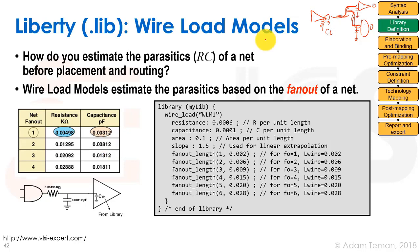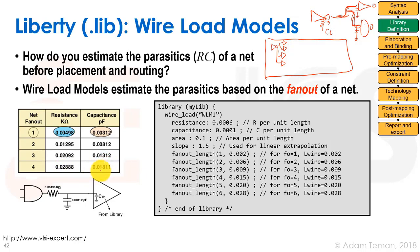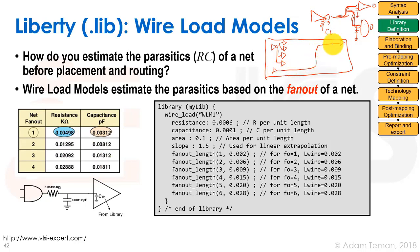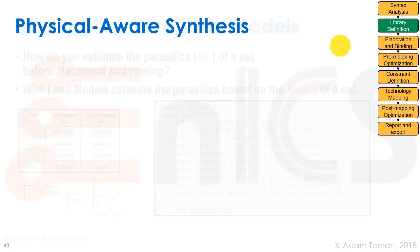An example of why wire load models are inaccurate: an inverter driving four nearby inverters (fan-out 4) gets resistance ~0.02 and capacitance ~0.018. Meanwhile, a different inverter driving one inverter across the entire chip (fan-out 1) gets estimated wire resistance and capacitance that are about five and six times smaller respectively — even though that long net is obviously much worse in terms of actual resistance and capacitance. Estimating parasitics through fan-out alone is simply not a good approach.